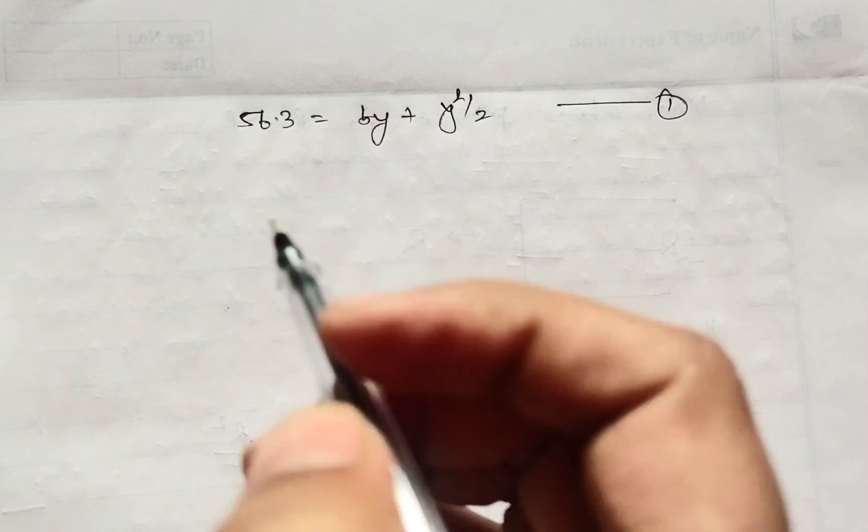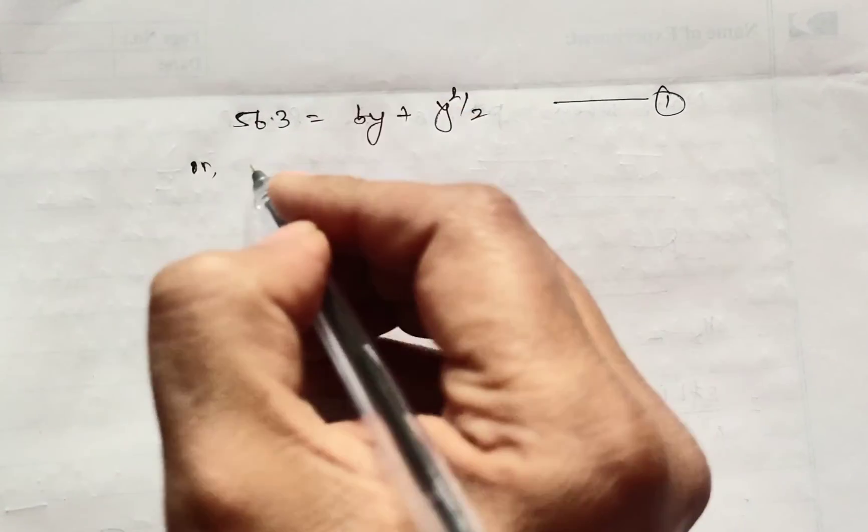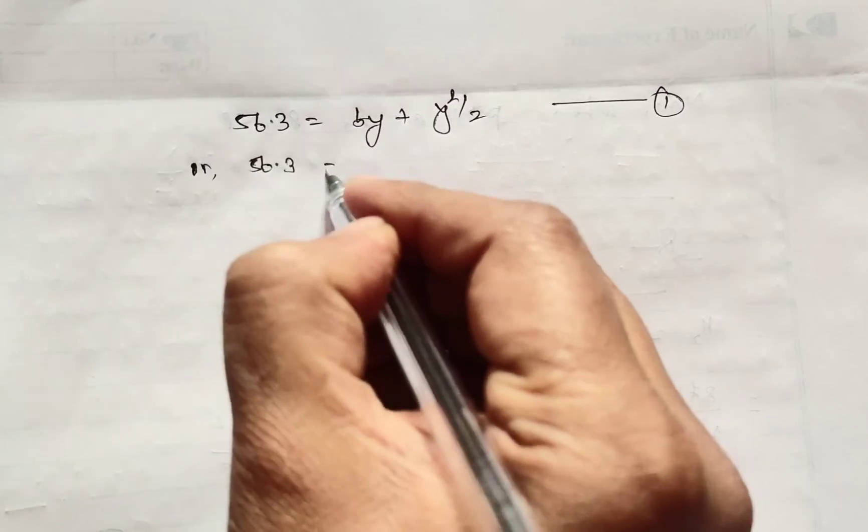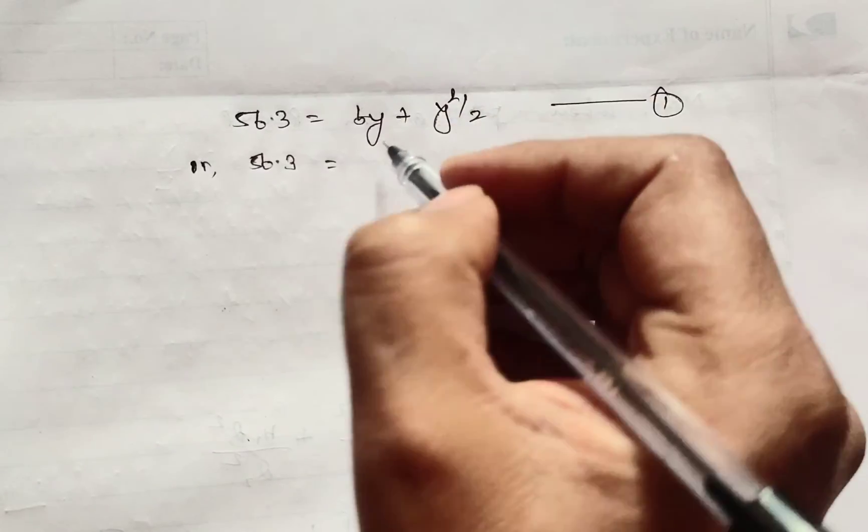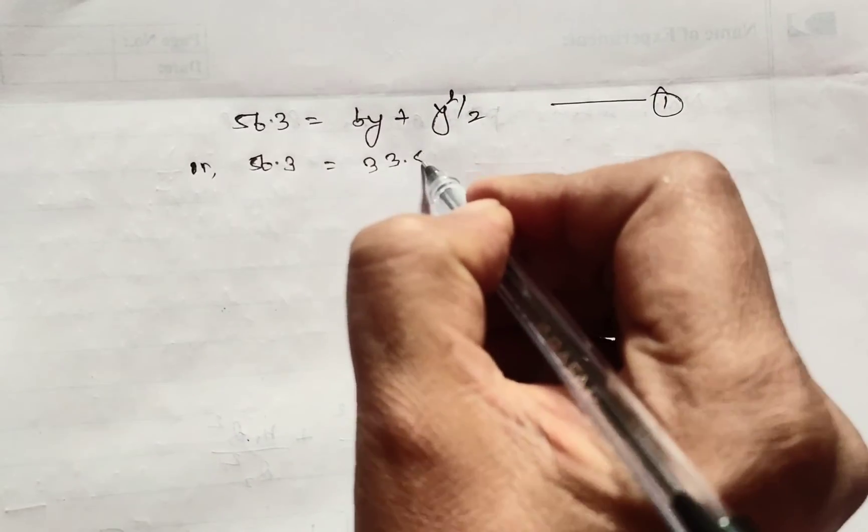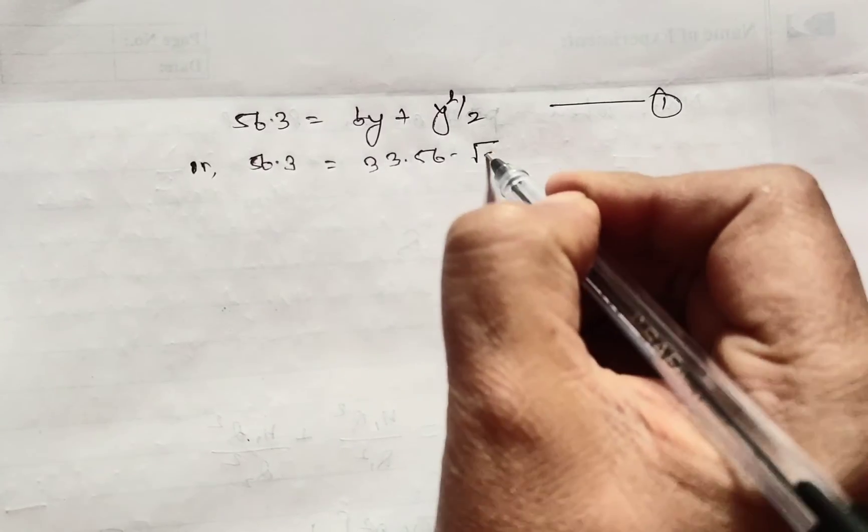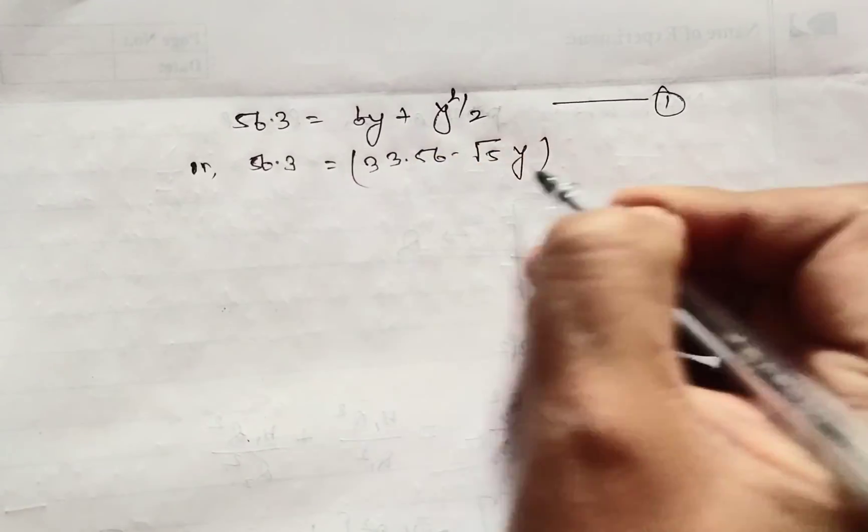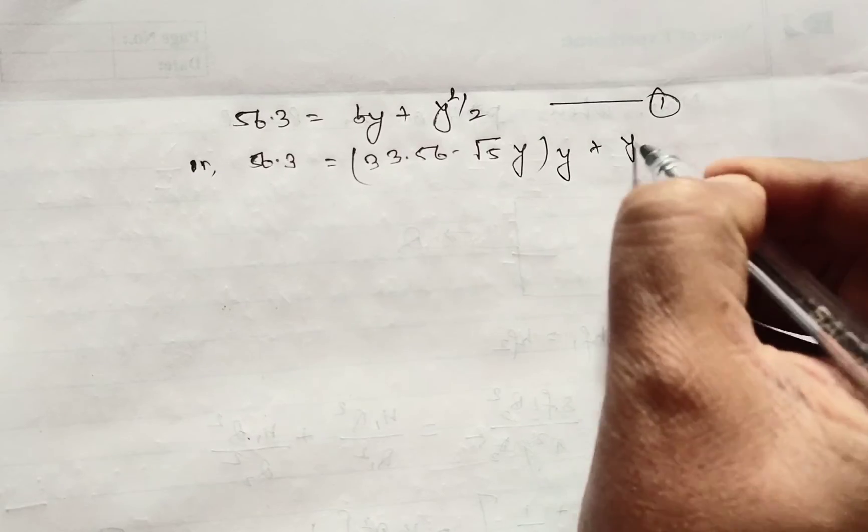Placing the value of B in equation 2, we get 56.3 equals the value of B, which is 33.56 minus root over 5Y, times Y, plus Y square by 2.